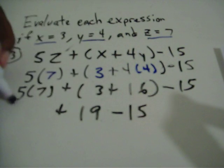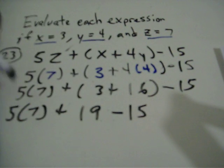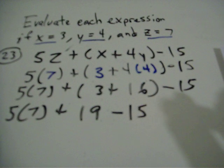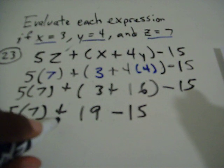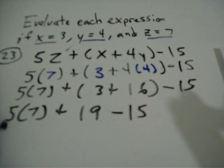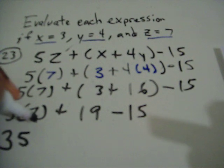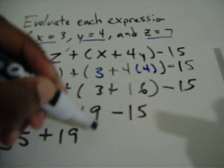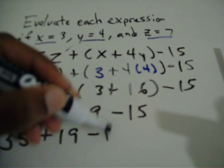Over here, 5 times 7. With order of operations, I have to do 5 times 7 before I add. So I do 5 times 7, which is 35, plus 19, minus 15.